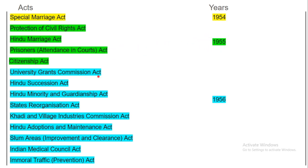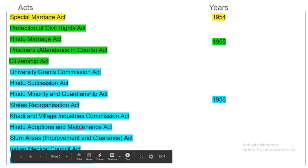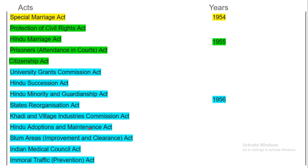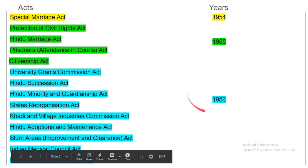University Grants Commission Act, Hindu Succession Act, Hindu Minority and Guardianship Act, State Reorganisation Act, Khadi and Village Industries Commission Act, Hindu Adoption and Maintenance Act, Slum Area Improvement and Clearance Act, Indian Medical Council Act, and Immoral Traffic Prevention Act — these acts all passed in the same year, 1956.